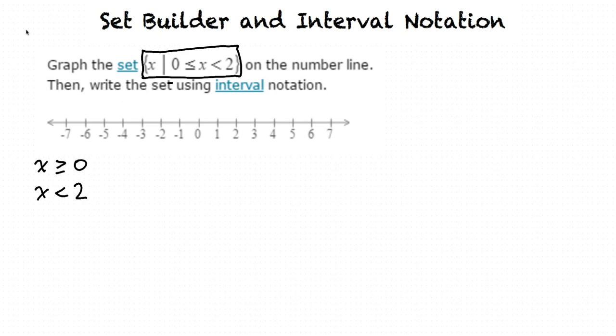Can we go over how to graph this so that I can get a visual representation? Definitely, let's do this right now. On our number line, we want to show values of x that are equal to and greater than 0, and less than 2. We see that 0 is included, so let's plot x equals 0 with a closed circle to show that it is included. We also see that x does not equal 2, it only approaches it.